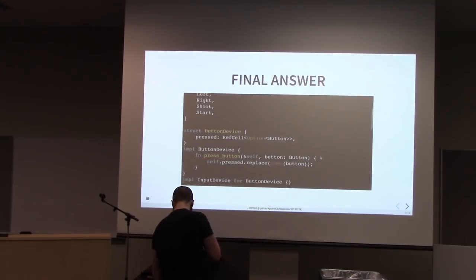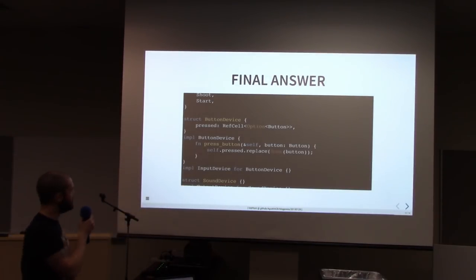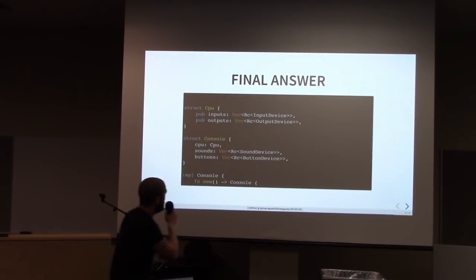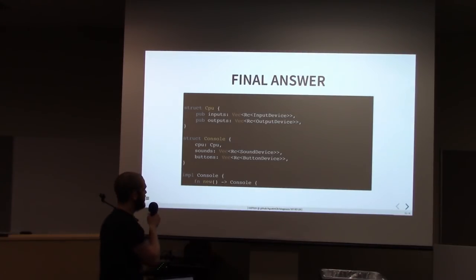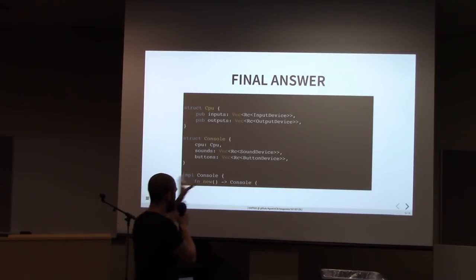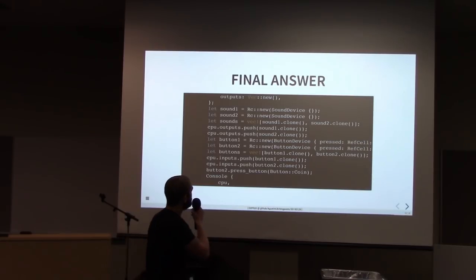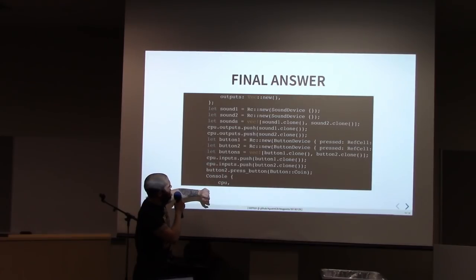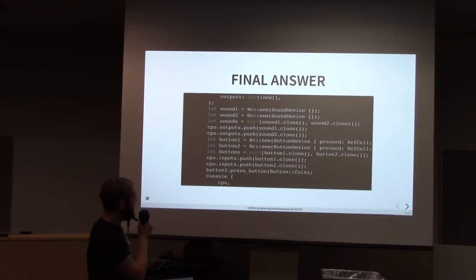It looks something like this. The button device has a RefCell of whether the button is pressed or not. And here, the CPU's vector, instead of being that monstrosity, is just a vector of reference-counted versions of the trait — because reference counting doesn't need the Box. This keeps it very concise. The implementation is straightforward — you just insert what you need. You can then add the input devices to the CPU and comfortably press the button without displeasing the compiler.